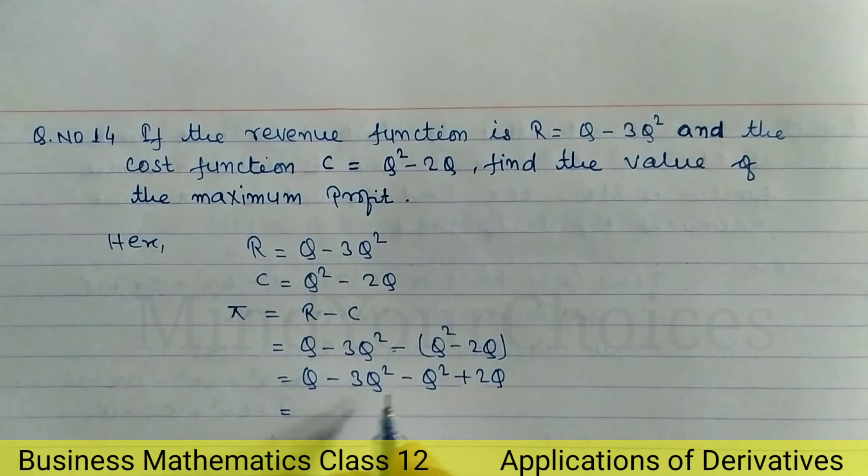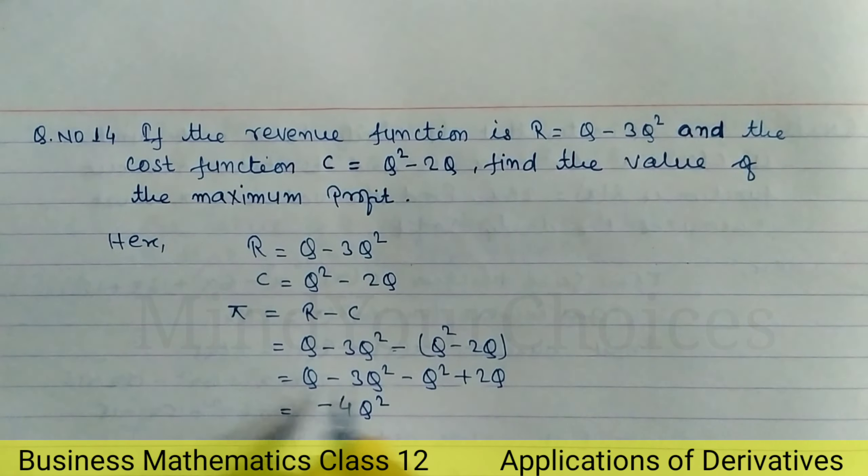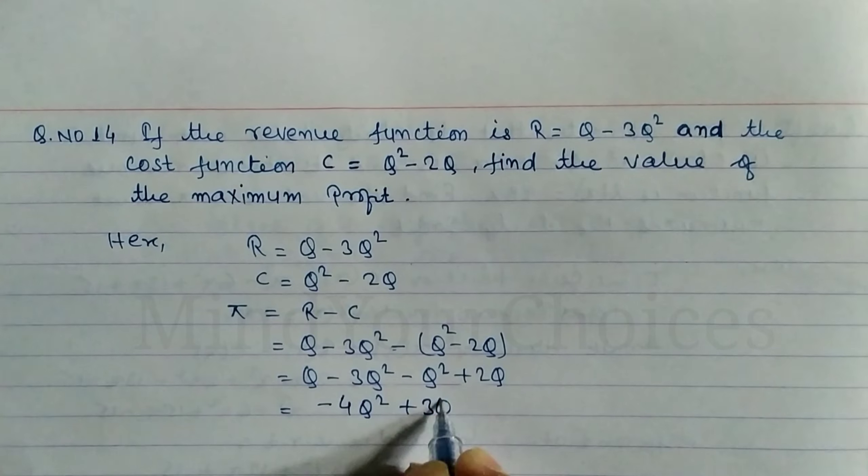Arranging in descending order of power range, minus 3 minus 1 equals minus 4, so we can write here minus 4Q square. Q plus 2Q equals 3Q.